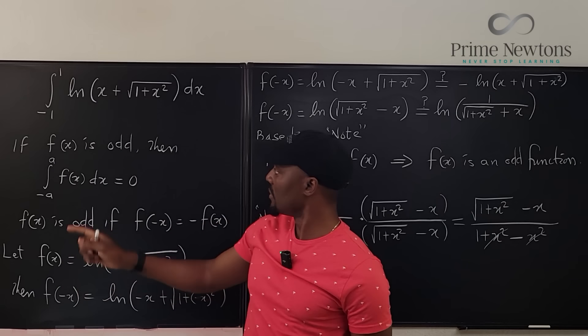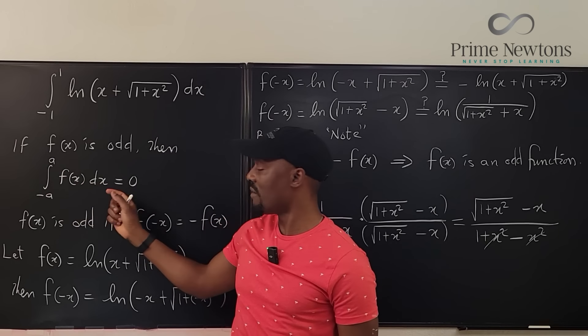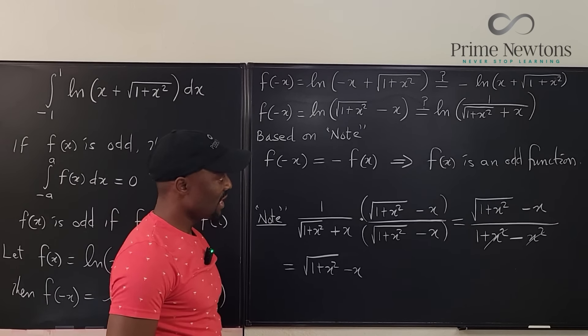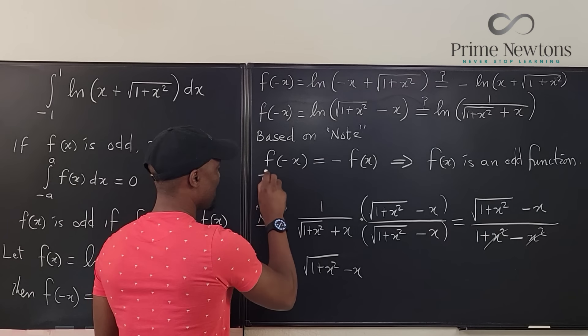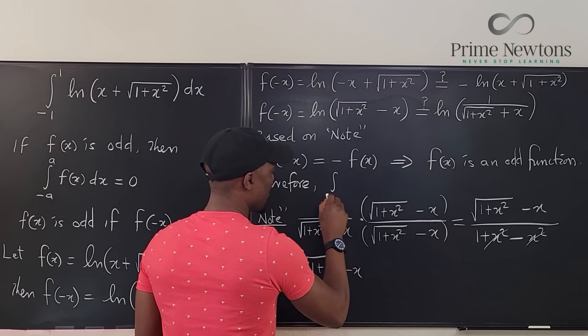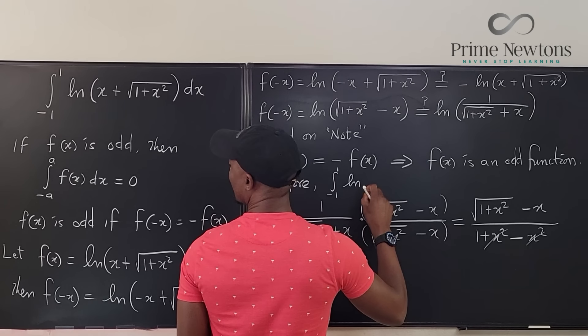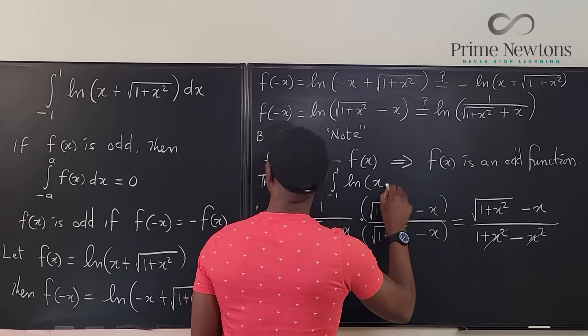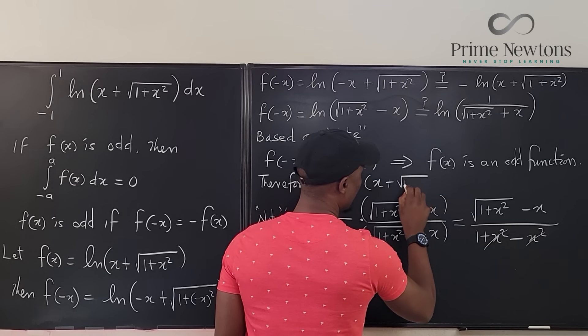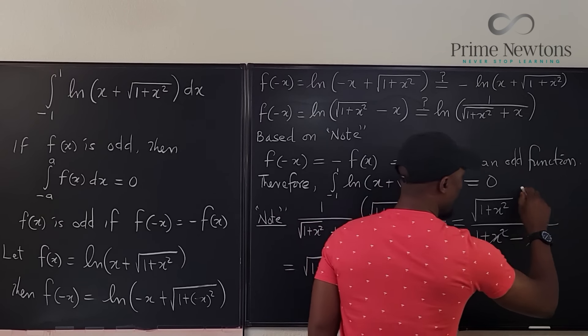And because we've shown that this is equal to this implies that f of x is an odd function. And because it's an odd function, this claim is true because our a is 1, and we have a function and it's equal to 0. Therefore, the integral from negative 1 to 1 of the natural log of x plus the square root of 1 plus x squared dx is equal to 0. Done.